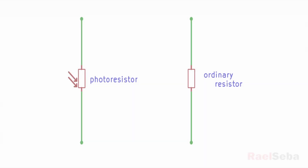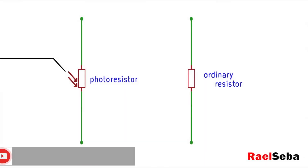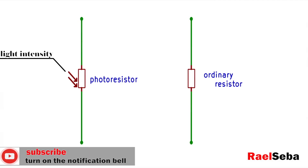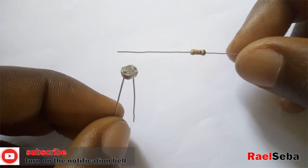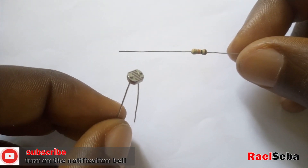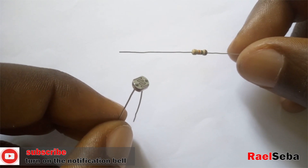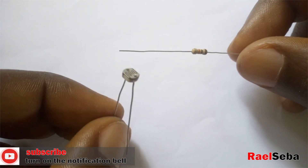The first thing to know is the circuit symbol. Similar to an ordinary resistor, the only difference is the arrow which indicates light intensity. In reality, the difference is clear — they also behave differently. The common thing is that they both have two pins.